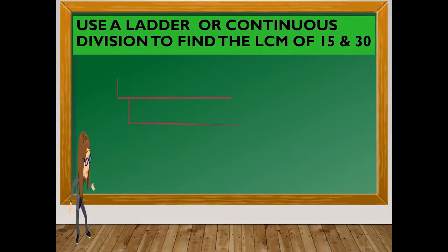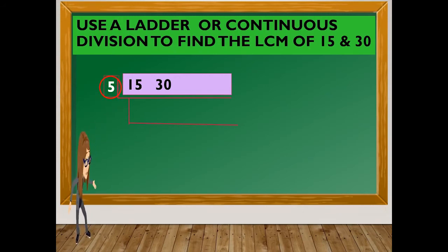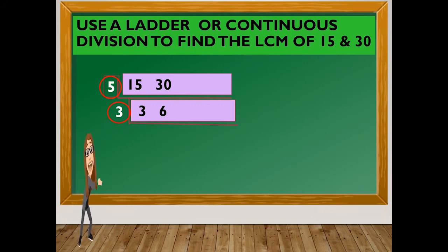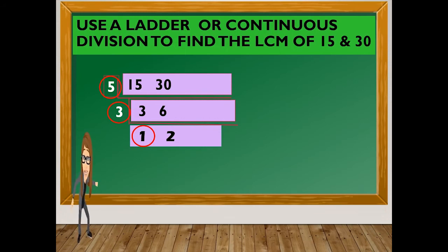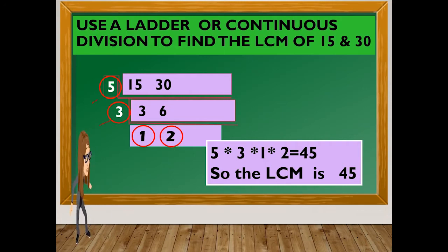Now let's find the LCM of 15 and 30. The common factor for 15 and 30 is 5. So 15 divided by 5 is 3, and 30 divided by 5 is 6. The common factor for 3 and 6 is 3. So 3 divided by 3 is 1, and 6 divided by 3 is 2. The least common multiple is 5 times 3 times 1 times 2, which equals 30.